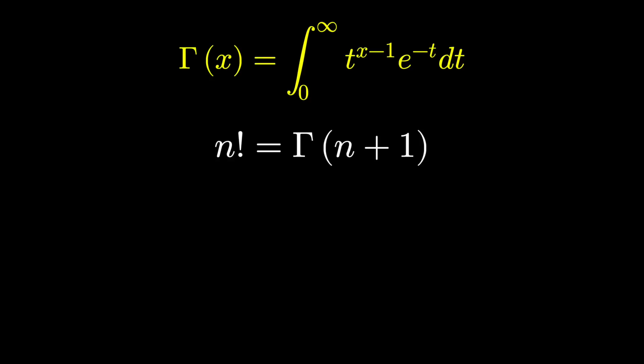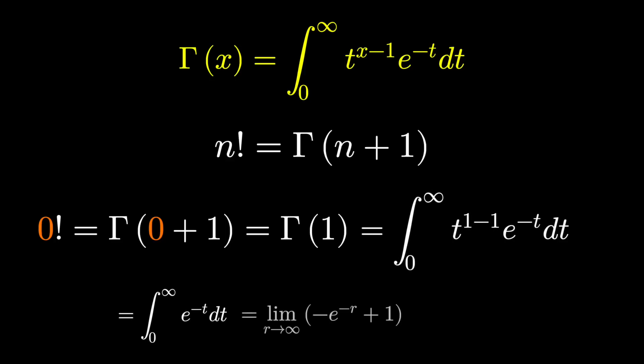So what should 0 factorial be? Well, according to the gamma function, it should be gamma of 1. Just substitute 1 into this formula. And a little bit of calculus computing this integral. What do we get? Of course, it's 1.